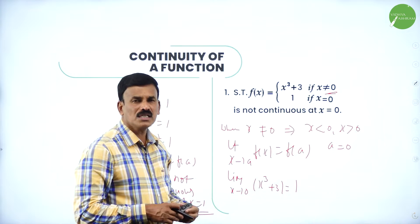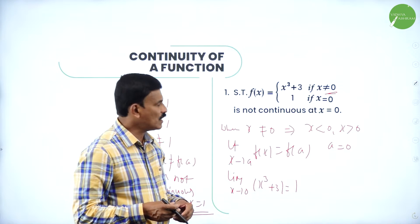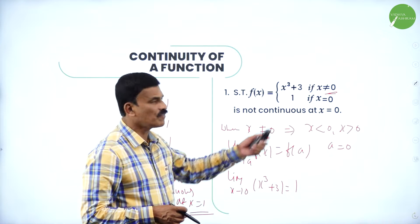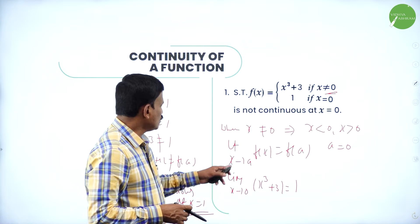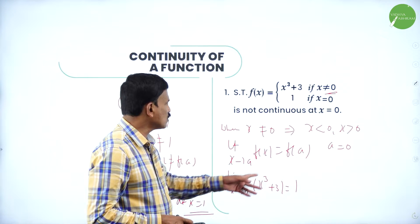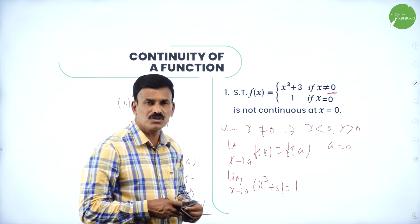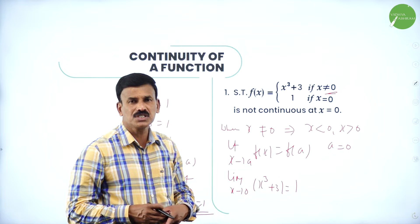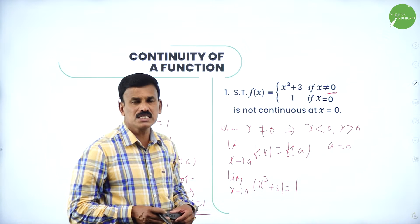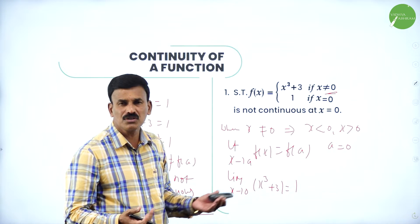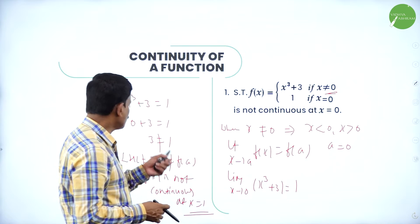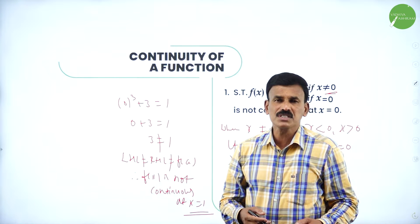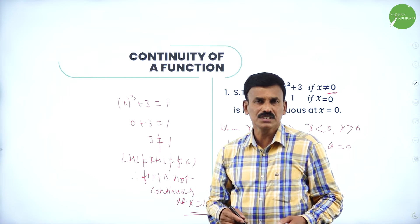Since x ≠ 0 means x < 0 or x > 0, both limits are equal: limit as x→0 of (x³ + 3) = 3. The functional value when x = 0 is f(0) = 1. So 0³ + 3 = 3 ≠ 1. Therefore left hand limit ≠ right hand limit ≠ functional value, so f(x) is not continuous at x = 0 — it is discontinuous.